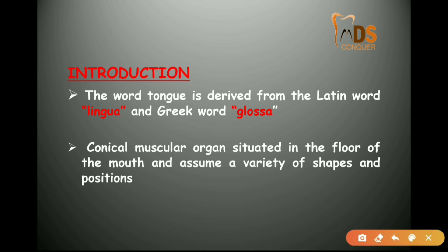The tongue is a muscular organ situated in the floor of the mouth. In Latin it is called 'lingua,' whereas in Greek it is called 'glossa.'